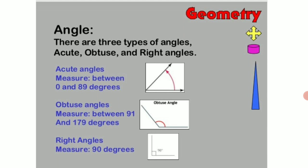What is a right angle? A right angle is an angle which measures exactly 90 degrees. That is called a right angle.